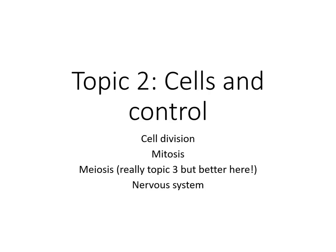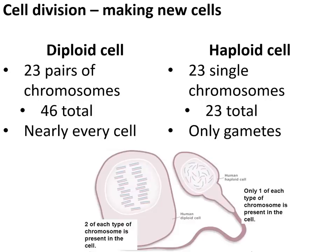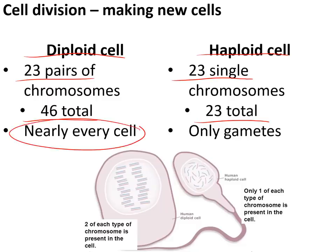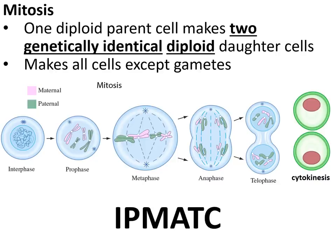Topic two: cells and control. Cell division — cells can either be diploid, with 23 pairs of chromosomes (46 total), or haploid, with 23 single chromosomes. Nearly every cell in your body is diploid; the only haploid ones are your sperm and eggs. Diploid cells are made by mitosis, in which one diploid parent cell makes two genetically identical diploid daughter cells.